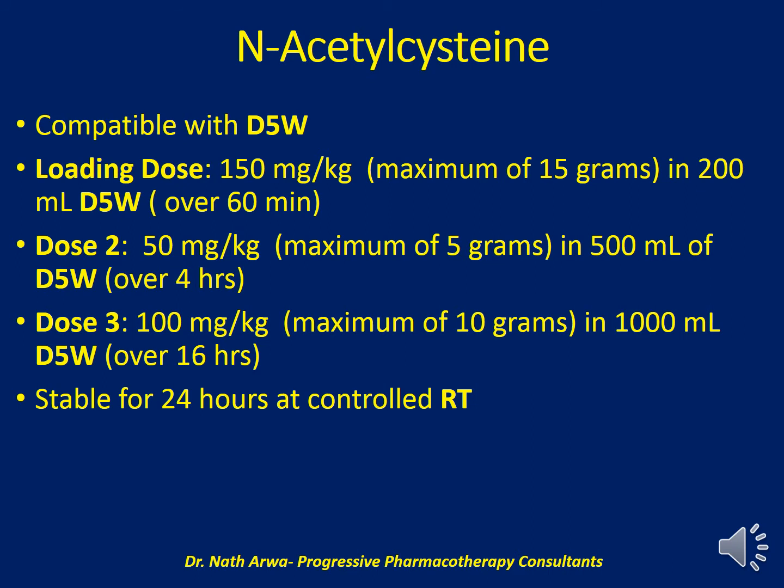N-acetylcysteine is compatible with 5% dextrose. The loading dose of 150 mg per kg should be prepared in a total of 200 ml of 5% dextrose and infused over one hour after homogenizing. Dose 2, at a rate of 50 mg per kg, should be diluted in 500 ml of 5% dextrose and infused over 4 hours after homogenizing. Dose 3, at a rate of 100 mg per kg, should be diluted in 1 liter of 5% dextrose and infused over 16 hours after homogenizing. Such solutions are stable for 24 hours at controlled room temperature.